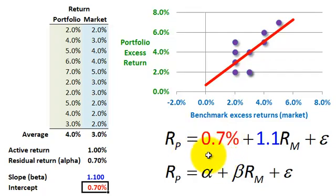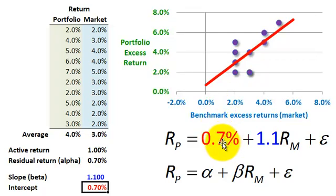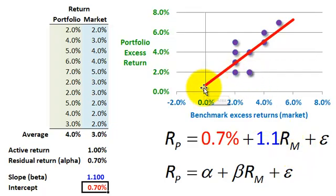That 0.7% is our alpha — specifically, it's the ex-post or realized alpha; it's the intercept of the regression line. The 0.7% is the portion of the return that we cannot attribute to common factor exposure. So if we're up with a portfolio excess return of 6% on the line, most of that is due to our beta — our exposure to the benchmark — and then 0.7% is due to alpha, which is going to be luck or skill: the portion we can't explain by common factor or benchmark exposure.